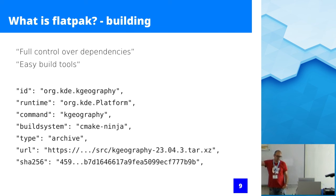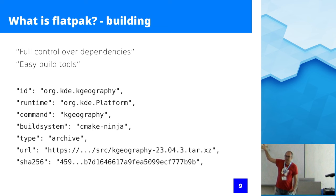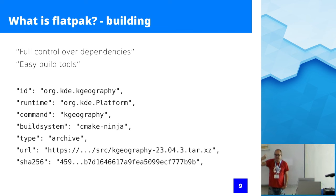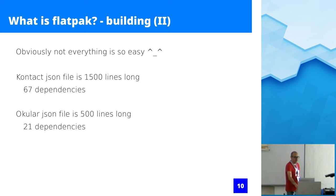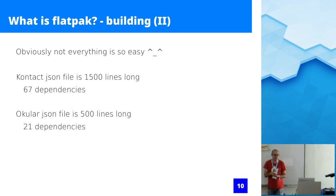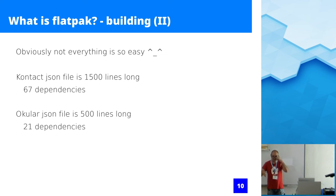Sadly, not everything is so easy. We have Kontact, which is almost 1,500 lines long, and we have Okular which is 500 lines long, because of the dependencies these big applications have. You have to spell out all your dependencies — you say Okular uses Poppler, but Poppler uses lib-lcms, so you need to spell out lib-lcms, and if lib-lcms uses something else not on the platform you need to compile that down. It gives you the power of deciding which library versions to use.